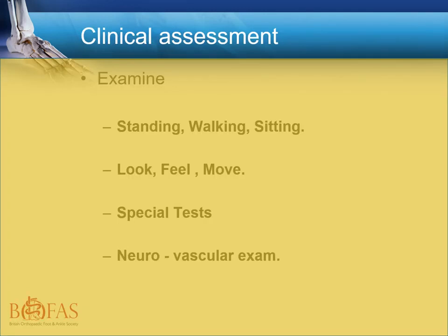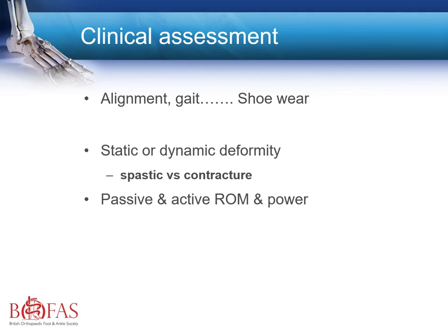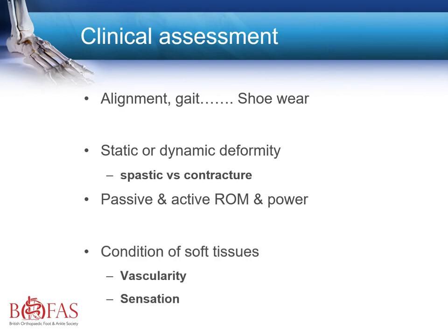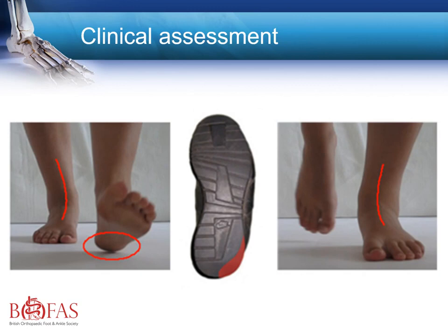When deciding which orthotic to use, a thorough clinical assessment is required in a structured manner — looking at the patient standing, walking and sitting, and examining the important areas of the foot. The alignment of the lower limb and hind foot are key, as is watching the patient walk and detecting any asymmetric shoe wear. Assessment should cover whether the deformity is static or dynamic, whether muscles are spastic or there is a contracture, and the passive and active range of all joints and tendon power. An asymmetric heel strike will produce consequential asymmetric outer wear in the lateral aspect of the heel.